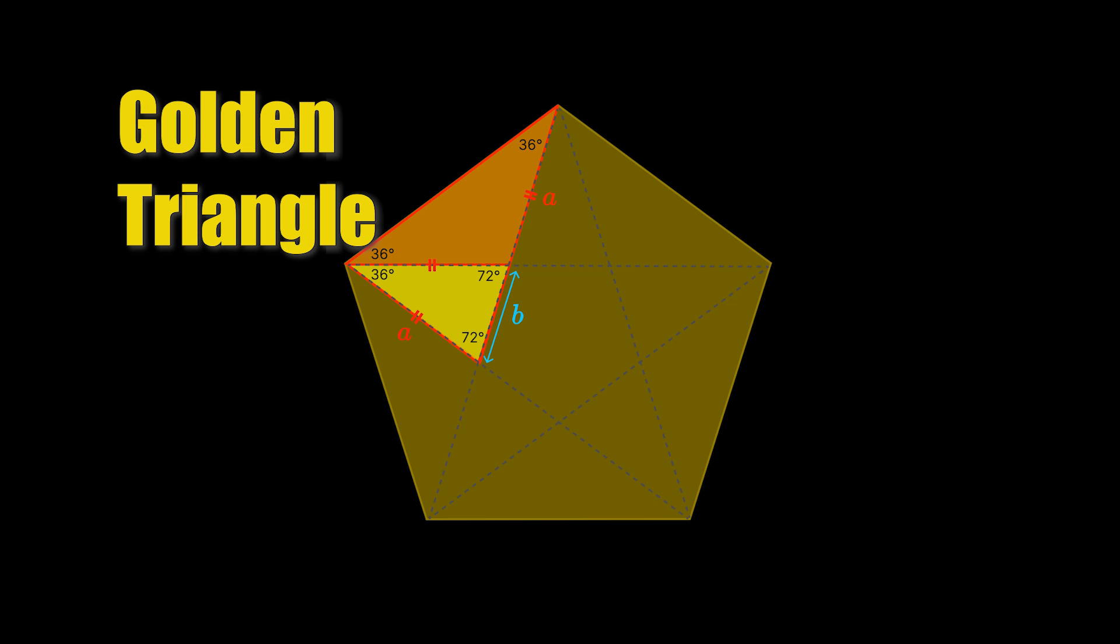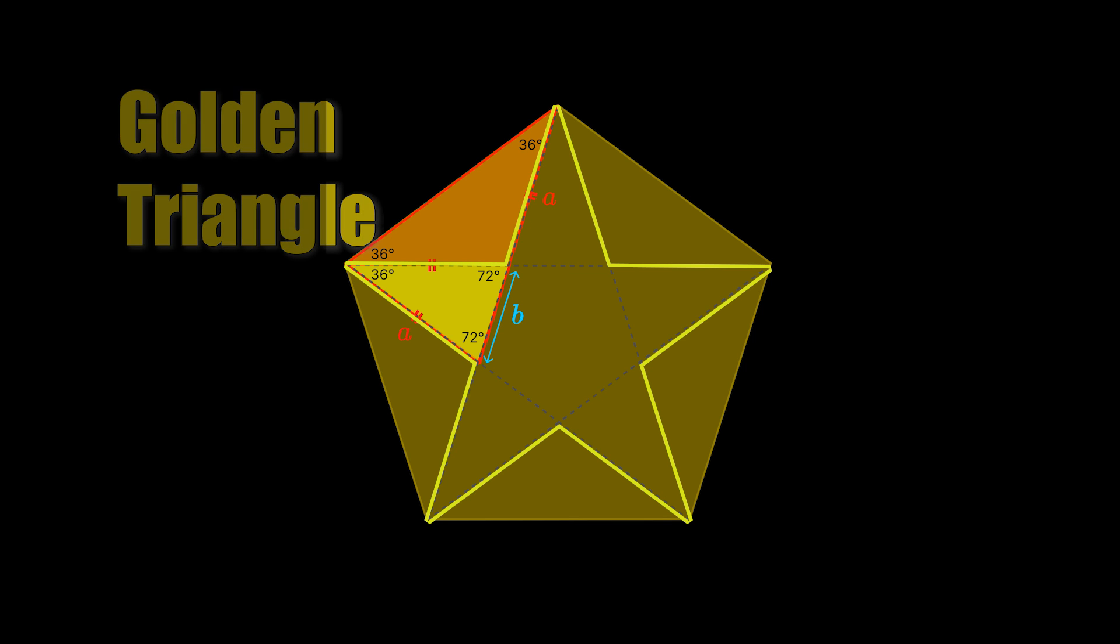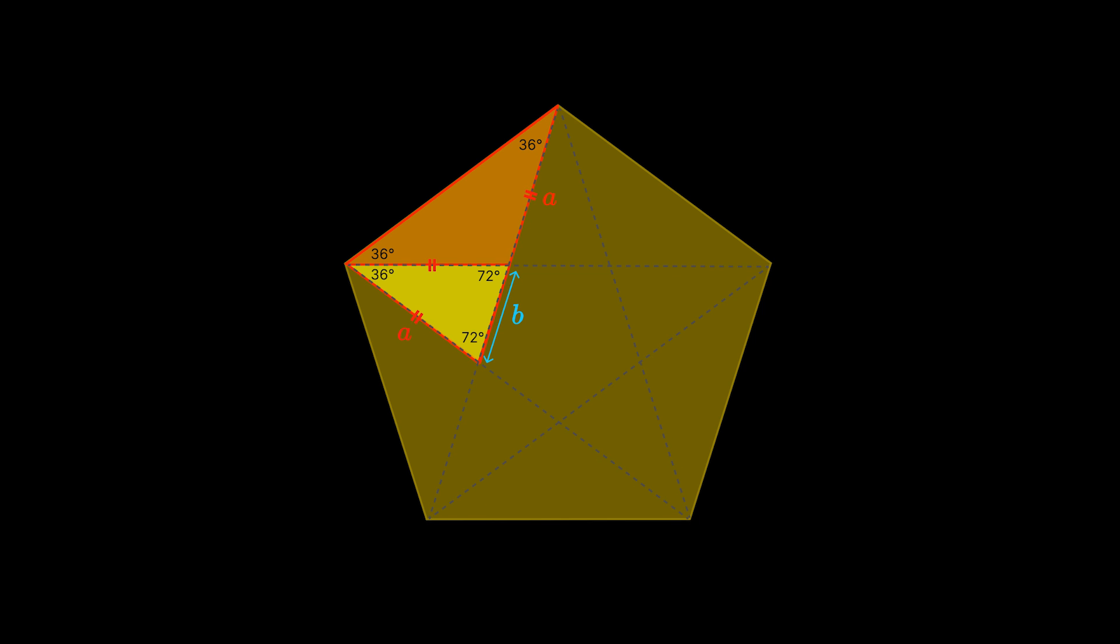And where it appears is if we join the vertices in this five-pointed star, which we call a pentagram, this triangle here turns out to be the golden triangle, and it's similar to this little golden triangle here. Both are isosceles triangles with angles of 72, 72, and 36 degrees.